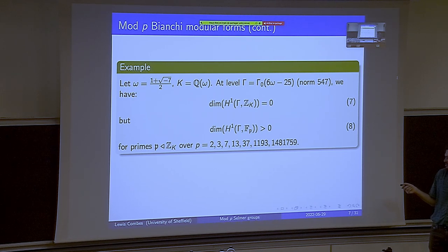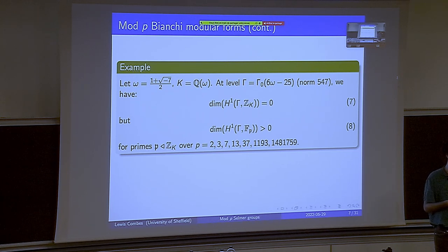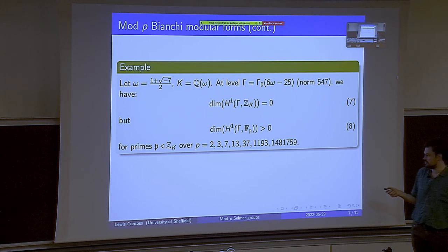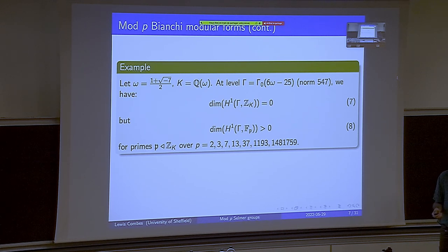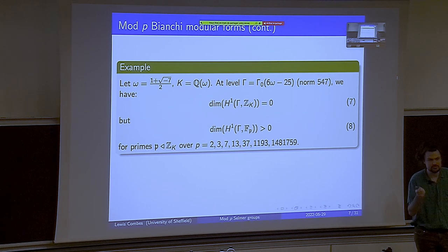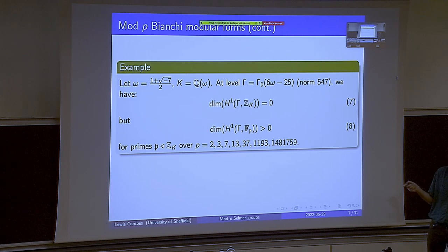I didn't know that last number was prime when writing this talk, but apparently it is. Paul Gunnells talked a lot about this kind of massive torsion that you don't really expect to see. These things are very interesting — this is not aberrant behavior, this is really what it's like. You see these massive primes fairly quickly. The data from Haluk's website goes up to norm 5000 over this field, and the last level at norm 4999 has a prime with 37 digits where this torsion appears.